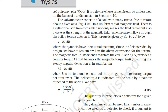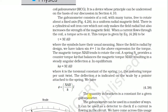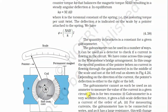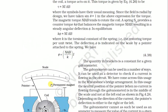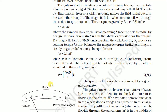The cylindrical soft iron core not only makes the field radial but also increases the strength of the magnetic field. When current flows through the coil, a torque acts on it. This torque is given by τ = NiAB, where the symbols have their usual meaning. Since the field is radial by design, we have sine θ = 1.